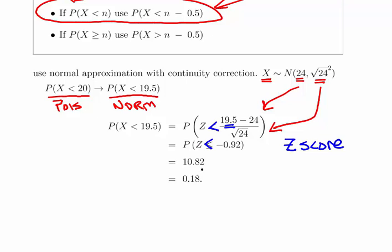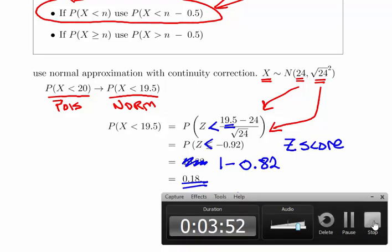What is the probability of Z less than minus 0.92? There's a little typo there. It is 1 minus 0.82, and that should work out to be 0.18. So that's it there.